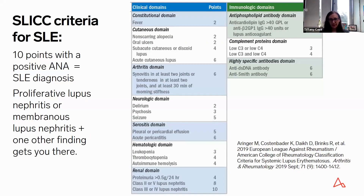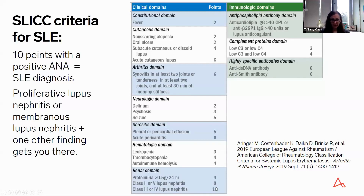The SLE Disease Collaborating Clinics has a point system for diagnosis of lupus, where in a patient with a positive ANA, 10 points across multiple systemic domains can give you a diagnosis of lupus. Looking at the renal domain, having membranous lupus nephritis is 8 out of 10 points, with proliferative lupus nephritis being 10 out of 10 points. So it is definitely something to keep in mind when you have a diagnosis of membranous or proliferative glomerulonephritis on kidney biopsy.